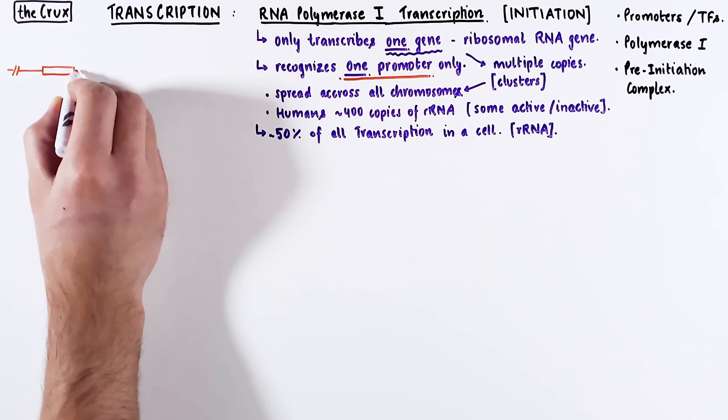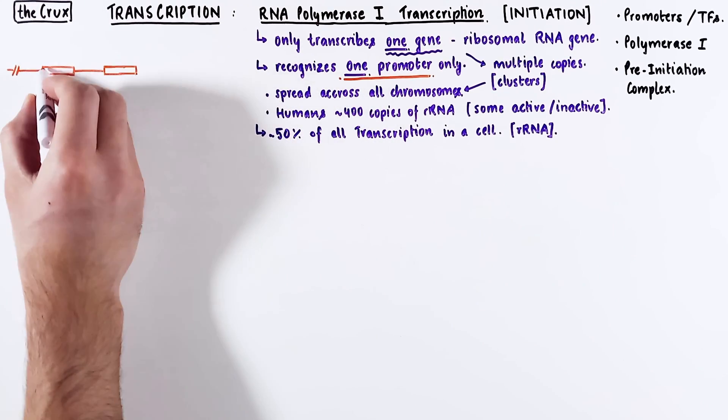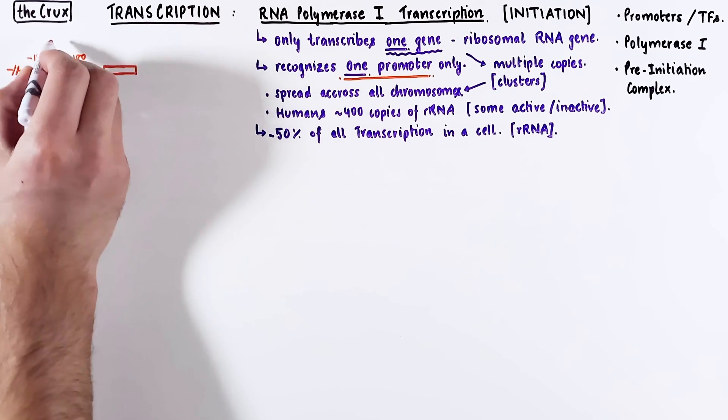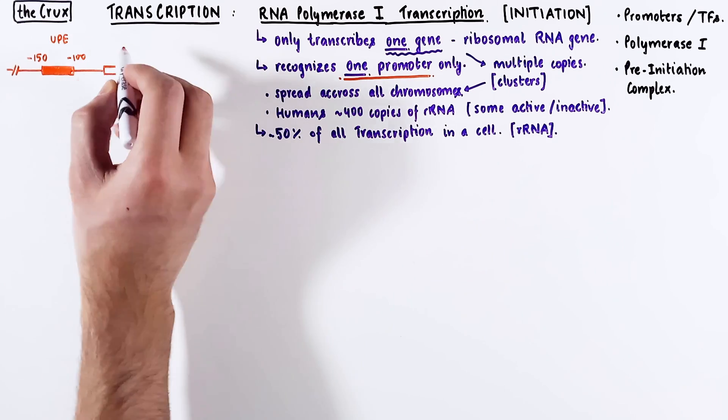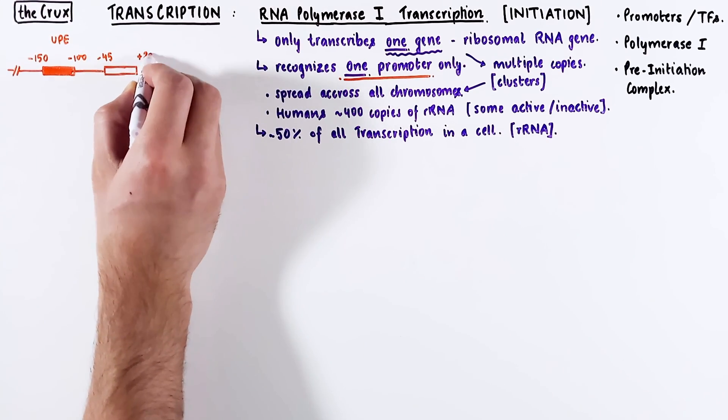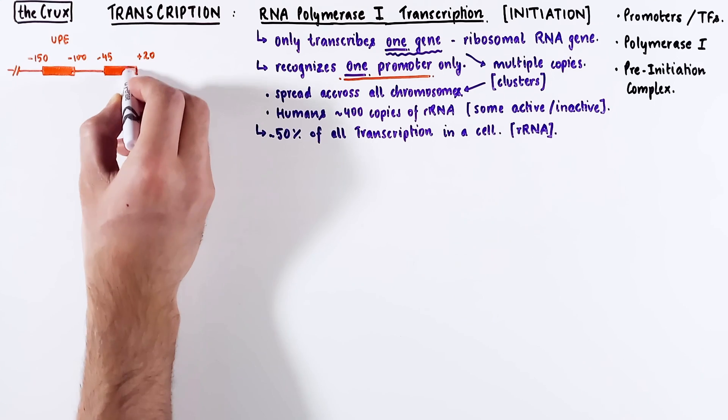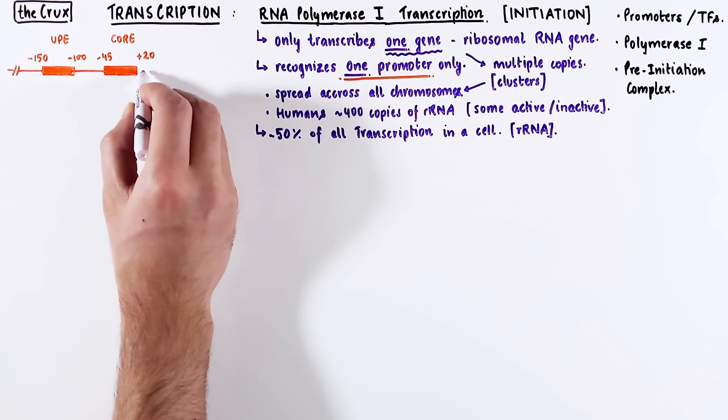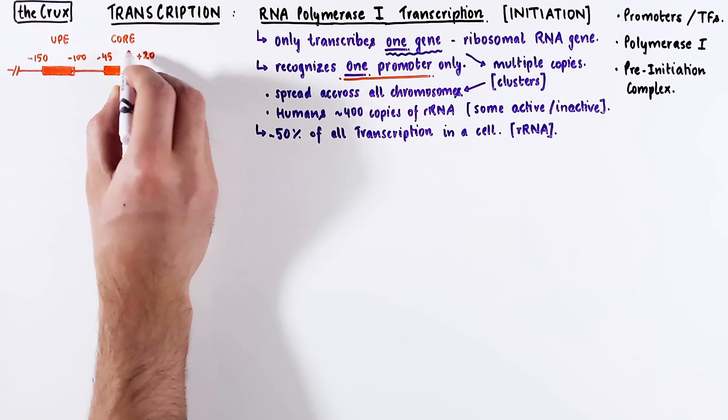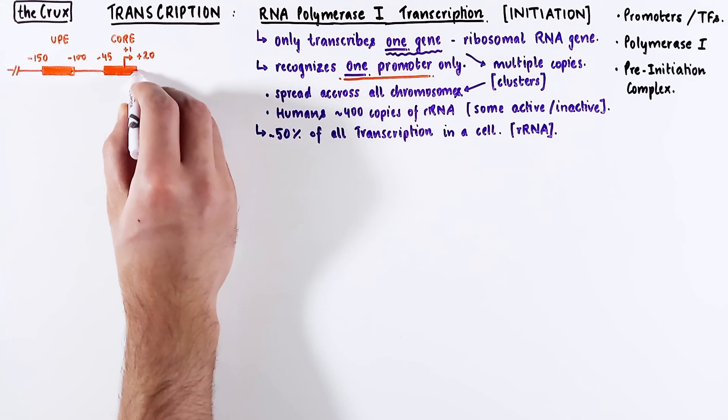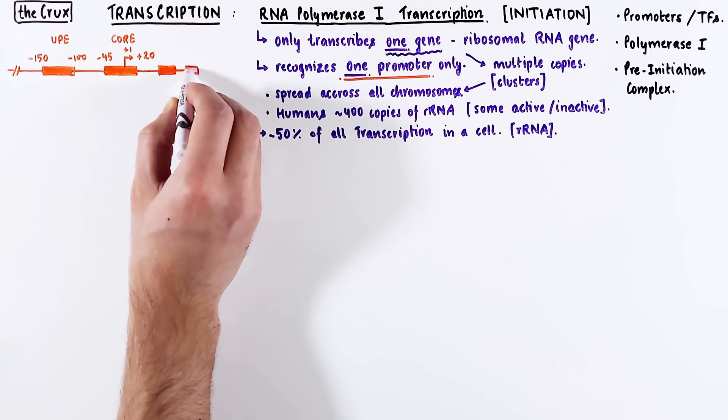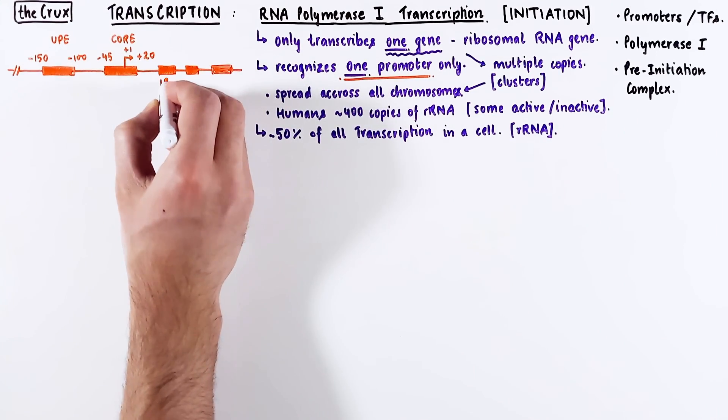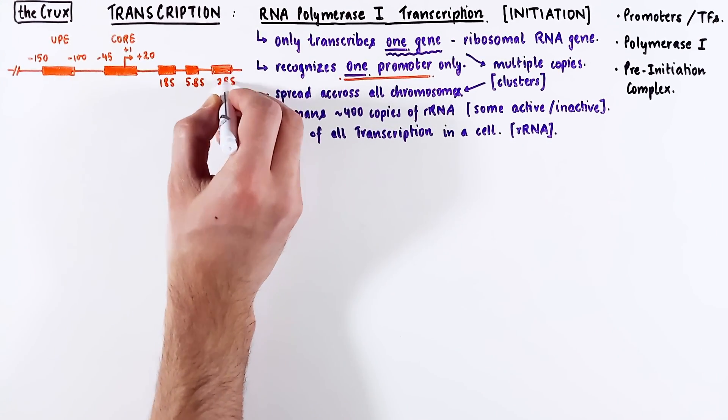In this promoter there are two special elements. One is between position negative 100 and negative 150, known as the UPE, which stands for upstream promoter element. The second major element is the core promoter, present between position negative 45 to plus 20. This means the core promoter overlaps with the transcriptional start site, which is the plus one position. Following the promoter you have the 18S, 5.8S, and 28S ribosomal RNA genes.